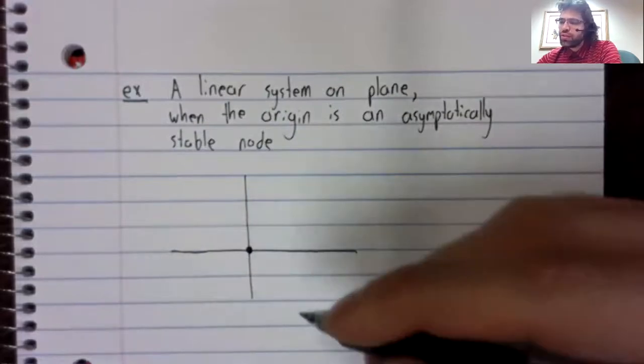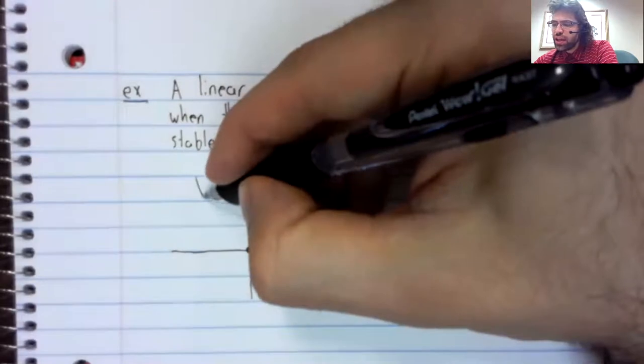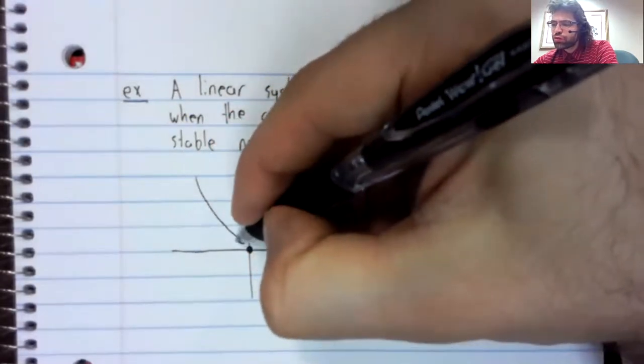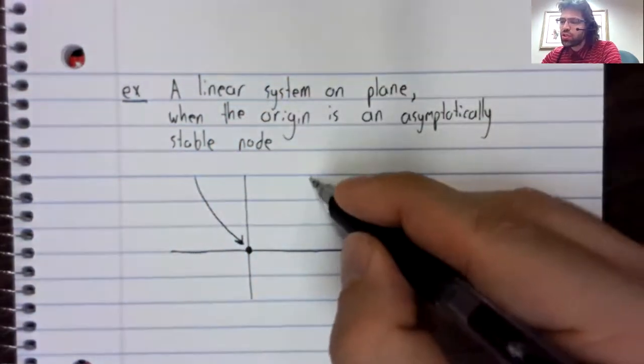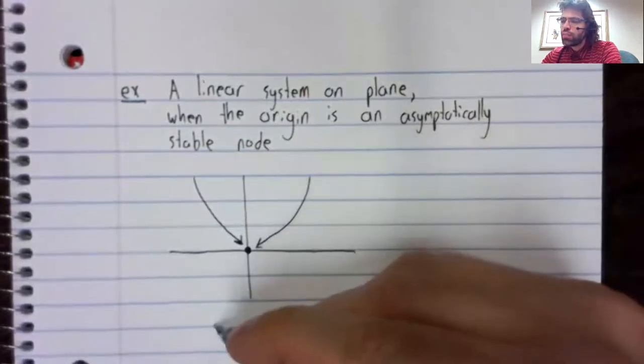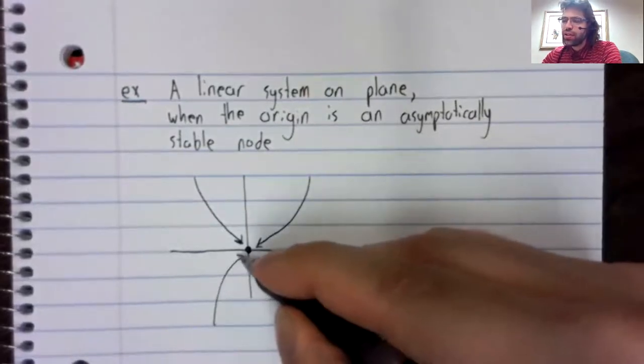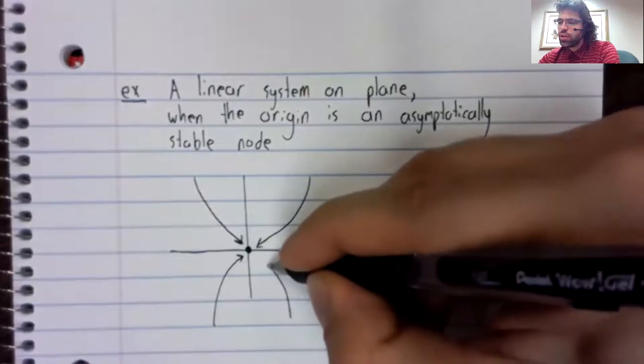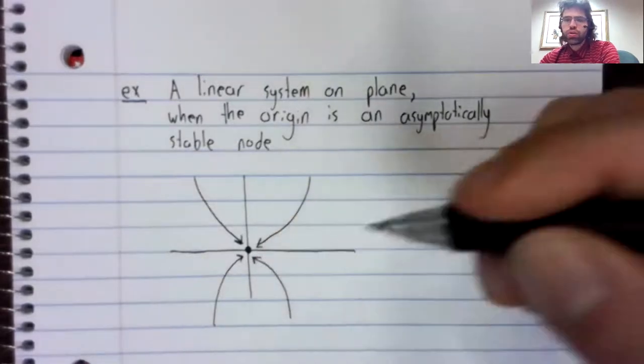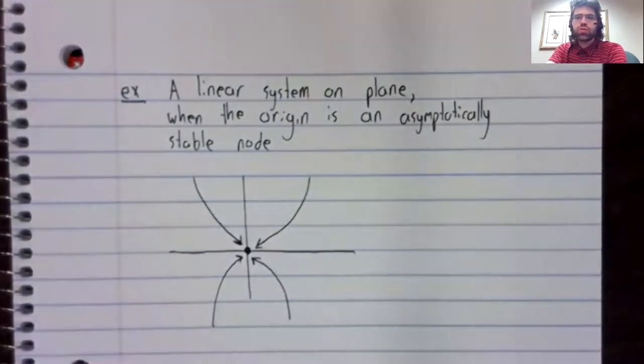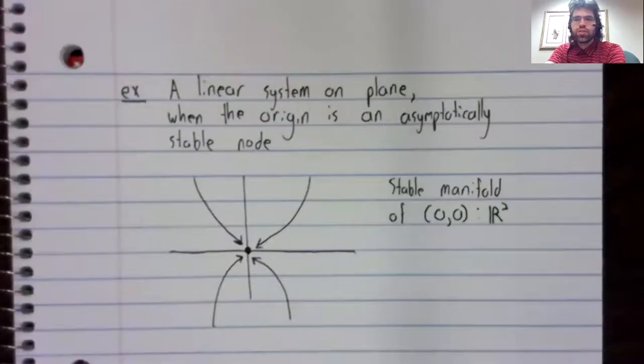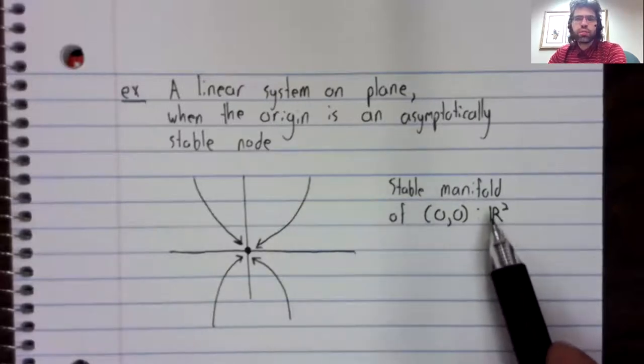When we're in this situation, every point on the plane converges towards the origin. So the stable manifold of the origin is the entire plane.